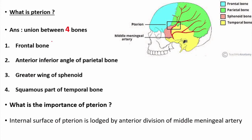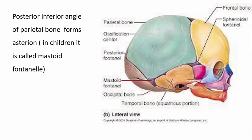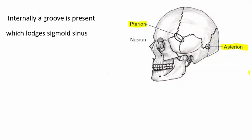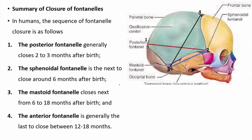The pterion is the union of four bones: the frontal bone, the greater wing of the sphenoid, the squamous part of the temporal bone, and the anterior inferior angle of the parietal bone. The posterior inferior angle of the parietal bone is also known as the asterion, and in children this membranous part is known as the mastoid fontanelle. This angle internally has a groove lodging the sigmoid sinus. Summary of fontanelle closure: first the posterior fontanelle closes, then the sphenoidal fontanelle, then the mastoid fontanelle, and lastly the anterior fontanelle.